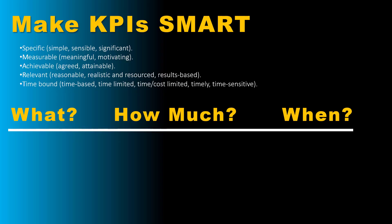So let's make a KPI SMART. SMART is a mnemonic device, but it's a little bit difficult to remember. S stands for specific, simple, sensible, and significant. M is measurable, meaningful, and motivating. A is achievable, agreed, and attainable. R is relevant, reasonable, realistic, resourced, and results-based. T is time-bound, time-based, time-limited, time-cost, timely, and time-sensitive. That is a lot to remember.